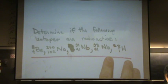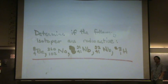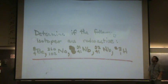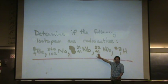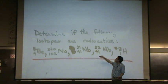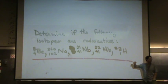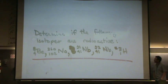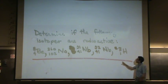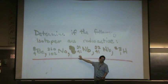Niobium-92 — not stable. It's radioactive because both the protons and neutrons are odd: 41 protons and 51 neutrons. I don't like that one at all.